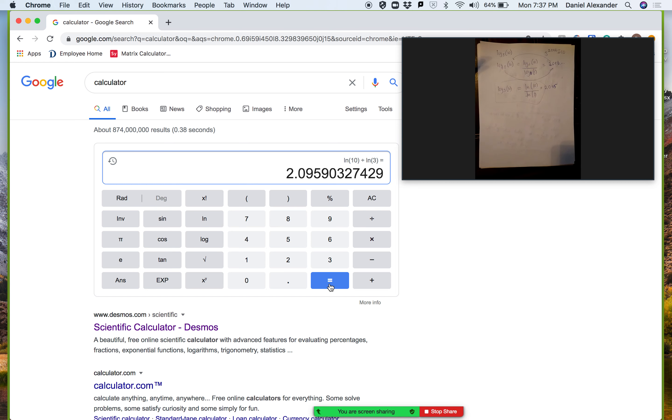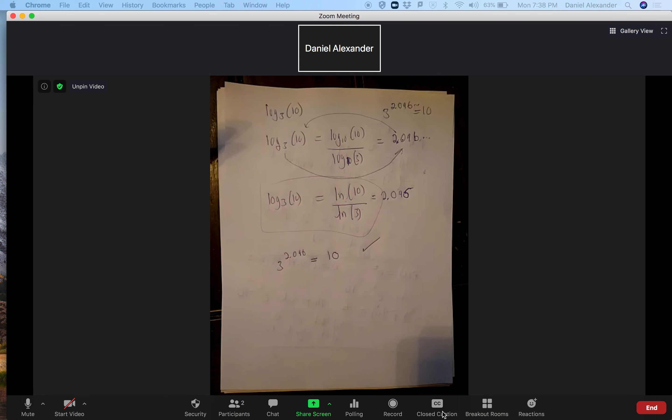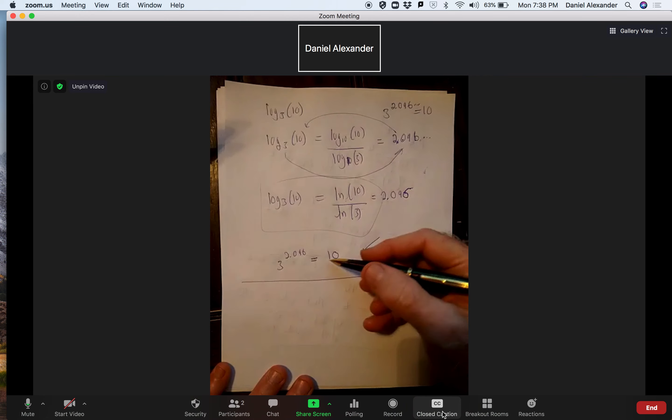And I mentioned before, hopefully you can see it in the video, that this tells me that 3 to the 2.096 is equal to 10. And so I'll show you, I'm going to enter that in. So I'm going to clear this and I'm going to do a 3 and then I'm going to enter in my exponent, and the exponent we decided was 2.096. And let's see what we get. We don't quite get 10. We get a little bit more, but that's because we rounded. So that's close enough. So I'm going to stop the share and just say that we just did a check and we got that.